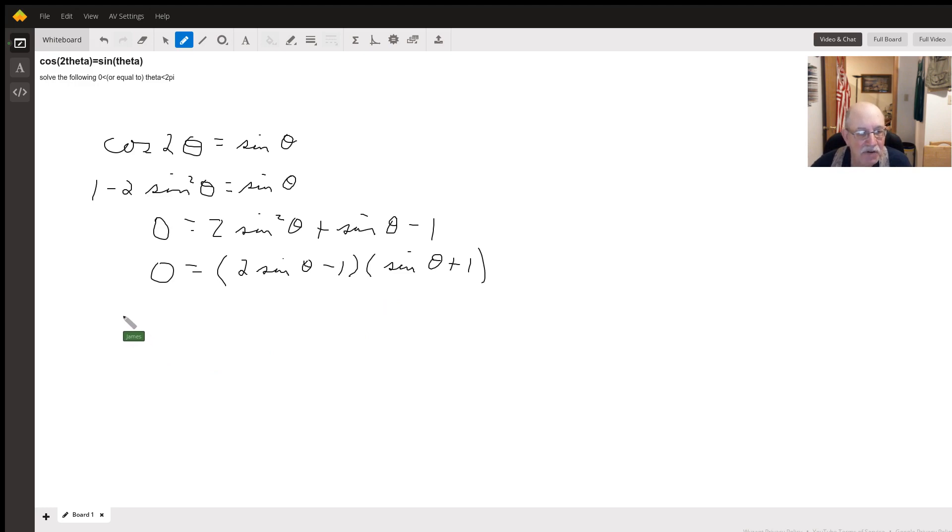So now we set both those factors equal to 0. 2 sine of theta equals... wait, it's going to be positive 1, not negative 1. Positive 1.